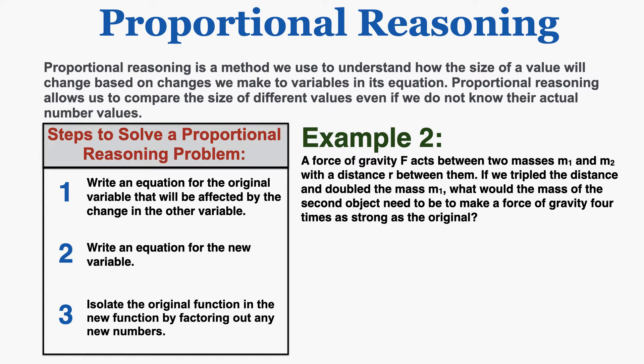I'll do one that's more complicated. A force of gravity f acts between two masses m1 and m2 with a distance r between them. If we triple the distance and double the mass m1, what would the mass of the second object need to be to make a force of gravity four times as strong as the original force? This is a complicated question, but you're not expected to just visualize it — you're expected to follow these three steps and isolate the variables.